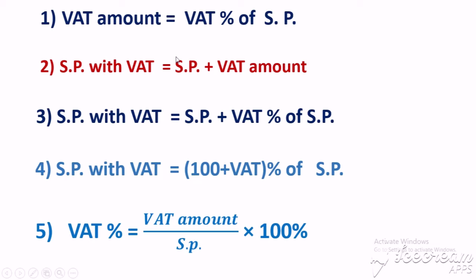Now I am going to write the above mentioned formulas. First: VAT amount equals VAT percent of SP. Second: SP with VAT equals SP plus VAT amount. Third: SP with VAT equals SP plus VAT percent of SP. Fourth: SP with VAT equals (100 plus VAT percent) of SP — if selling price equals 100, then 100 plus VAT percent gives SP with VAT. Fifth: VAT percent equals VAT amount upon SP multiplied by 100%.